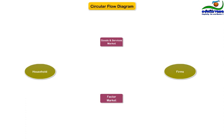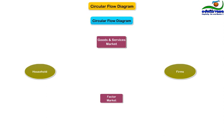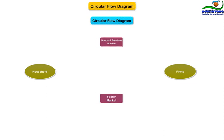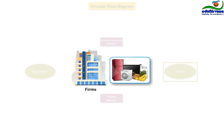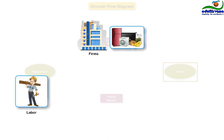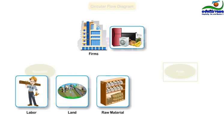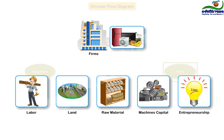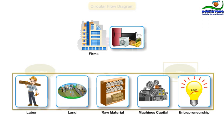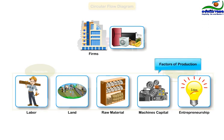Households and firms interact in two types of markets: goods and services, and the factor market. Firms produce goods and services using inputs such as labor, land, raw material, machines, capital, and entrepreneurship. These inputs are called the factors of production.